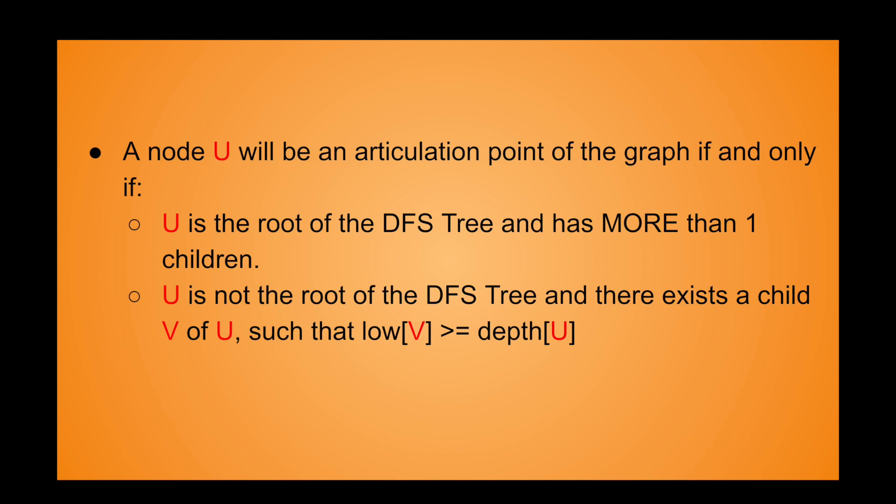So we've seen how to find bridges in a graph, but what about articulation points? The method is pretty much the same — we'll still be using the low array. The only difference is in the conditions. For a node U to be an articulation point, it should either be the root of the DFS tree with more than one child, or if it's not the root, it should have at least one child V such that low[V] is greater than or equal to depth[U], meaning there's no back edge from the subtree of V up to some ancestor of U. If any of these two conditions are satisfied, then U is an articulation point.